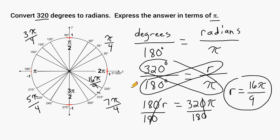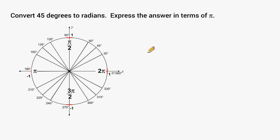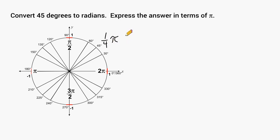Let's do another example. We have to convert 45 degrees to radians. Now, 45 degrees is just half of a right angle, or half of 90 degrees. Because 90 degrees in radians is pi over 2, or one half pi, we take half of a half, which is a quarter. So in radians, 45 degrees is equal to one quarter pi, written as pi over 4. Pi divided by 4 is the same thing as one fourth times pi.